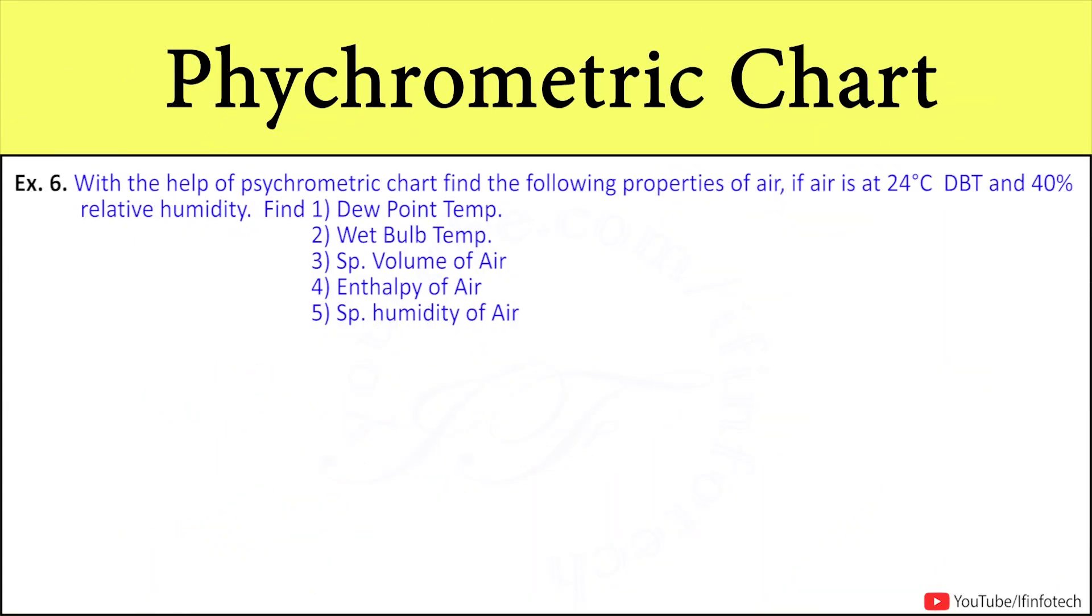Now, for the next numerical, the statement is: with the help of psychrometric chart, find properties of air if air is at 24 degrees Celsius dry bulb temperature and 40% relative humidity.